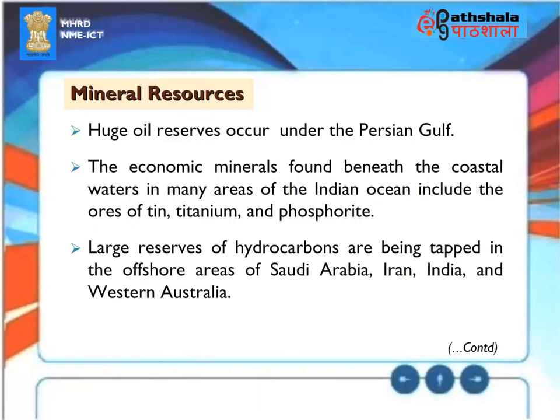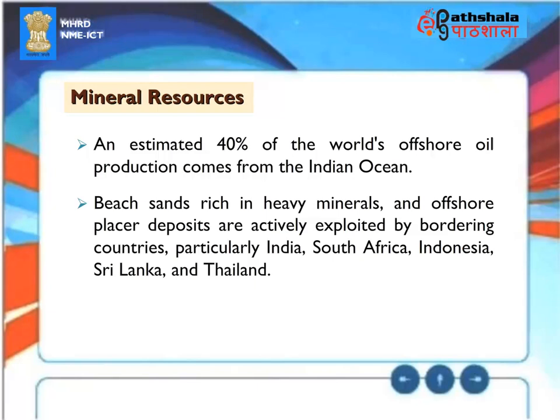Mineral resources. Huge oil reserves occur under the Persian Gulf. The economic minerals found beneath the coastal waters in many areas of the Indian Ocean include the ores of tin, titanium and phosphorite. Large reserves of hydrocarbons are being tapped in the offshore areas of Saudi Arabia, Iran, India and Western Australia. An estimated 40% of the world's offshore oil production comes from the Indian Ocean. Beach sands rich in heavy minerals and offshore placer deposits are actively exploited by bordering countries, particularly India, South Africa, Indonesia, Sri Lanka and Thailand.